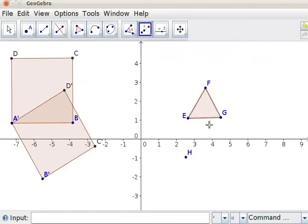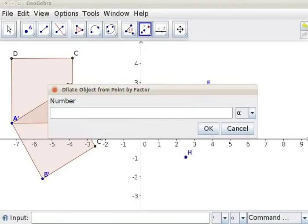This will highlight the triangle. Click on Point H. A dialog box opens. Type value 2 in the number field. Click on OK.